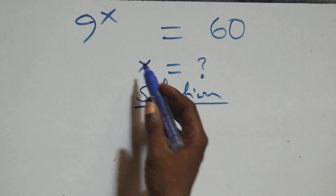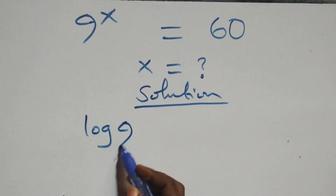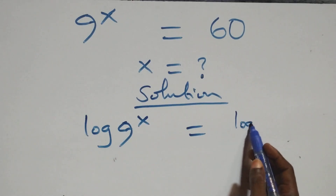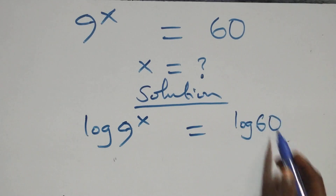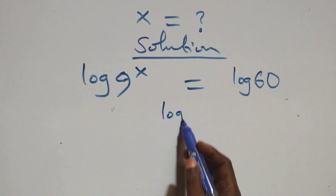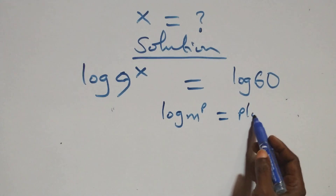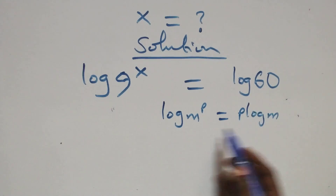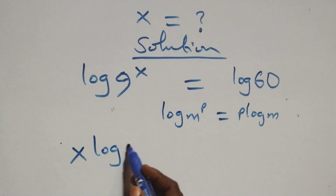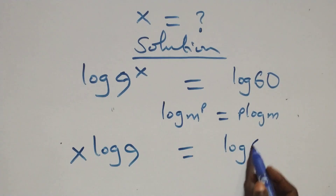What we have here: we take the log on both sides. We have log 9 raised to power x equals to log 60. Then we apply the power rule of logarithm — when we have log m raised to power p, that is the same thing as p log m. So this becomes x log 9 equals to log 60.